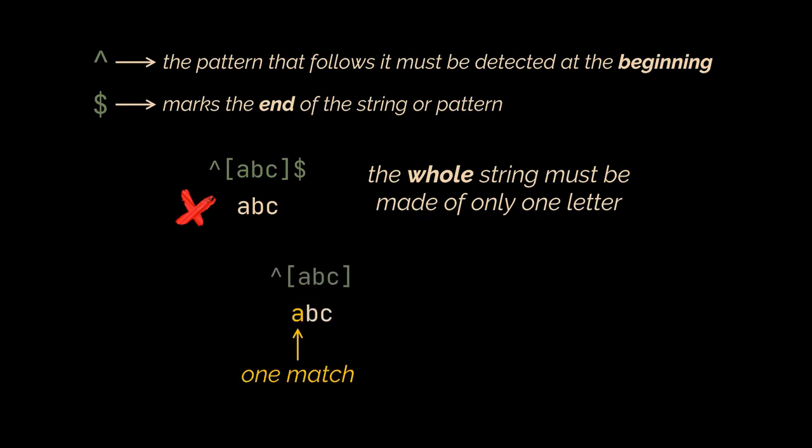If we remove the dollar sign, only then the first letter, which is A, will match our pattern, and only the first one, because we kept the caret and we have to match starting at the beginning of the string. And if we remove both the caret and the dollar sign, we will have three matches inside the same string of our pattern: the A, the B, and C.